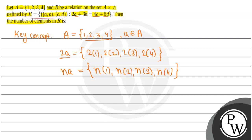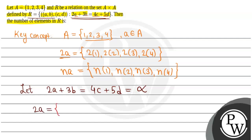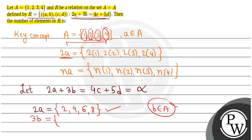Now, our relation R is: 2A plus 3B equals 4C plus 5D. Let us consider this value as alpha. The values of 2A are: 2×1=2, 2×2=4, 2×3=6, 2×4=8. And the values of 3B are: 3×1=3, 3×2=6, 3×3=9, 3×4=12.